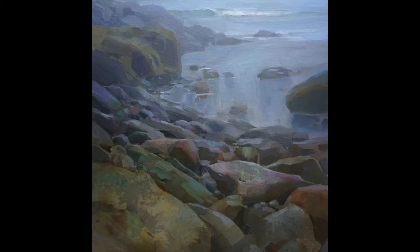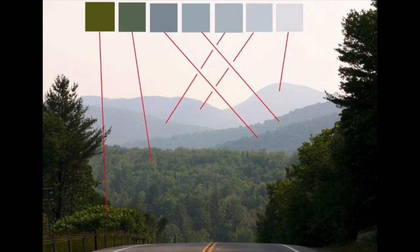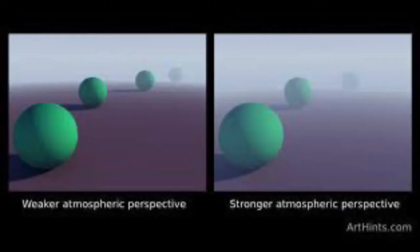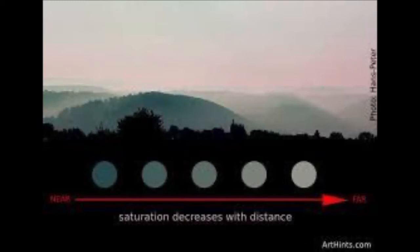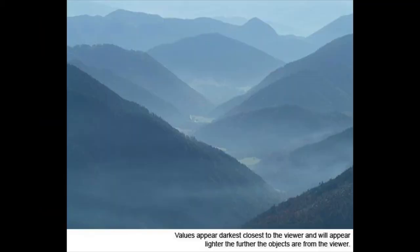There are some rules that apply to atmospheric perspective. As a rule, as things go back in space, they tend to get less saturated color. Also the contrast dissipates. The temperature gets cooler and bluer. The edges get softer as things go back in space. And the amount of texture dissipates as you go back in space. That's essentially a summary of the five tools we use as painters: value, color, color chroma, color temperature, edges, and texture.